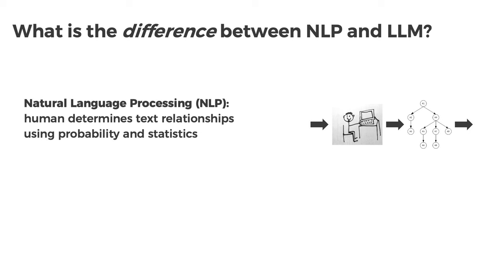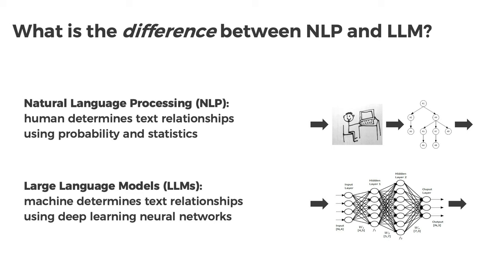Let's start with the differences between the two approaches. Traditionally, NLP has been done where a human researcher — a data scientist or machine learning engineer — digs into text data, uses probabilities, statistics, and math to cut and slice the data, analyze it different ways, and through this process they uncover insights that help them build a model they can roll out to production. Then large language models came along — a completely different approach.